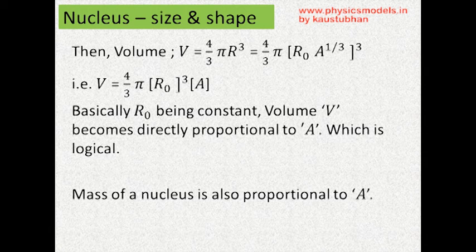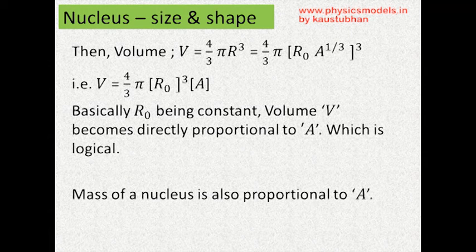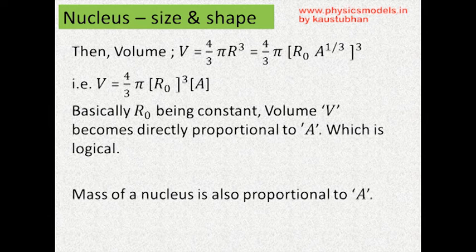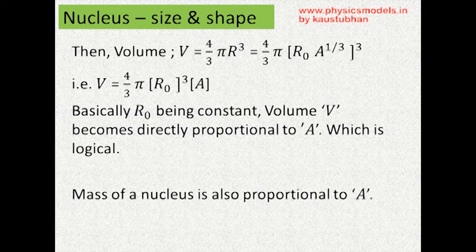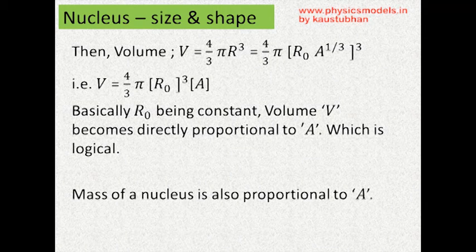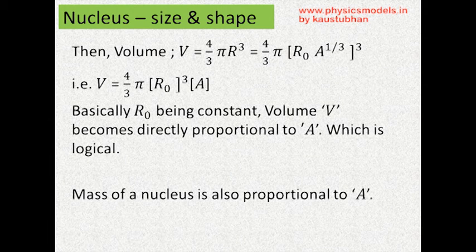So with the assumption of a sphere, V is 4 by 3 pi r cubed. Substitute for r as r₀ A to the power 1 by 3 whole cubed. Then you get 4 by 3 pi into r₀ whole cubed, and inside the brackets, A to the power 1 by 3 whole cubed becomes just A. Now r₀ is a constant, so basically the volume V becomes proportional to A. And that's logical.